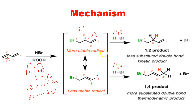The more stable carbocation — or here, more stable radical — forms a less substituted double bond, which is a less stable alkene. That is the 1,2 product, whereas the 1,4 product which forms via a less stable radical gives a more stable alkene. The 1,2 product is called the kinetic product as it can be formed at lower temperatures, and the thermodynamic product requires higher energy of activation, so we get the 1,4 product which has the more stable alkene.